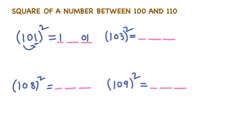Now multiply these two numbers. 1 into 1 is 1. You multiply this with 2. So 1 into 2 is 2. So in this way we can calculate 101 whole square.